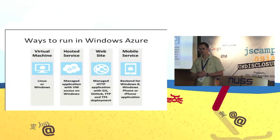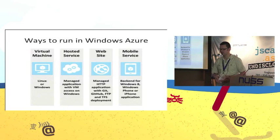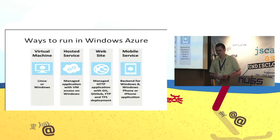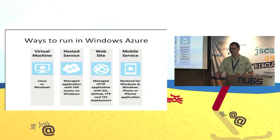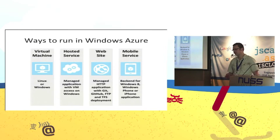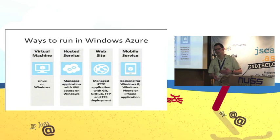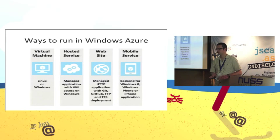First, you can reserve your own virtual machine — it doesn't have to be Windows. We support a number of Linux flavors as well, including Ubuntu, CentOS, and SUSE Linux. With a virtual machine you have administrative rights and can run whatever processes you want, including Node.exe. The added value Windows Azure provides is the ability to create multiple instances, cluster them together, and get basic load balancing for that web farm automatically.